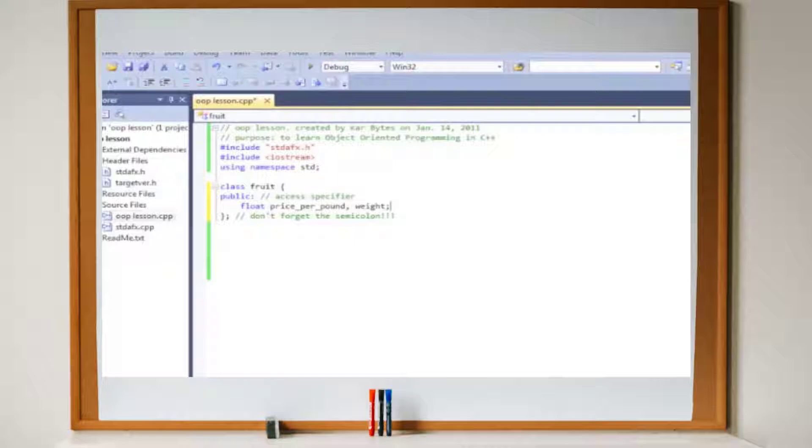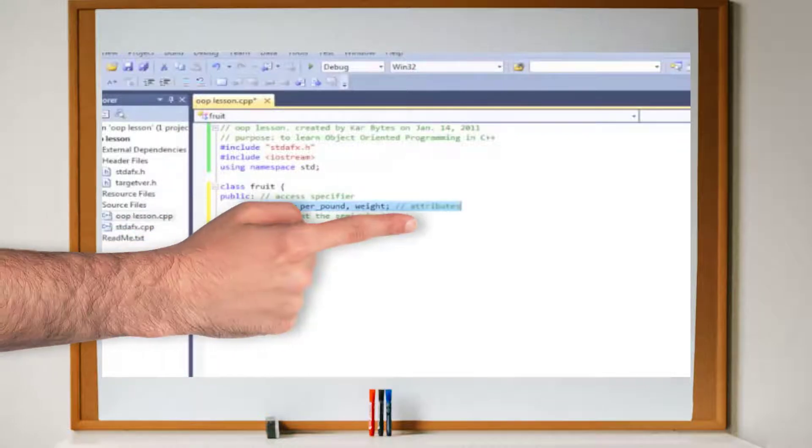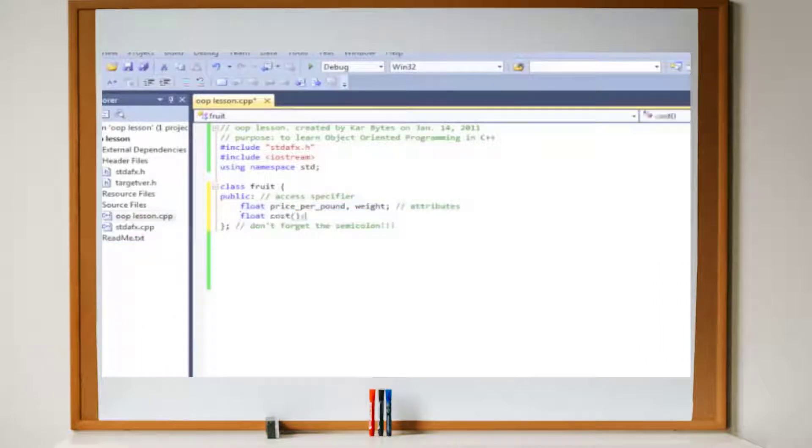Each member of fruit class will have the following attributes: price per pound and weight. Besides having attributes, members of a class can have actions or functions, methods. They can be declared inside the class or they can be declared outside the class, which is what we will do.